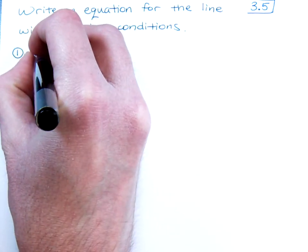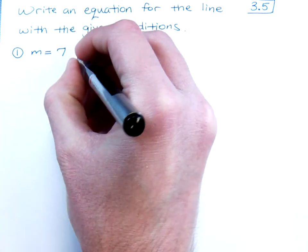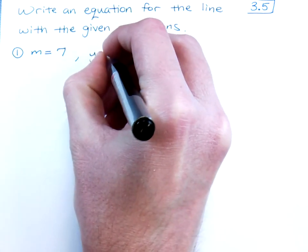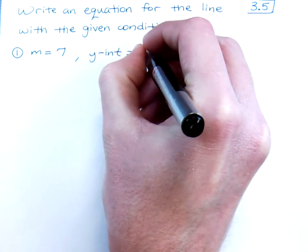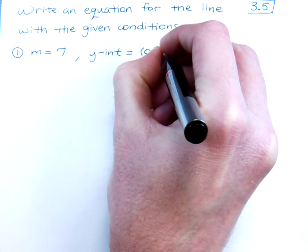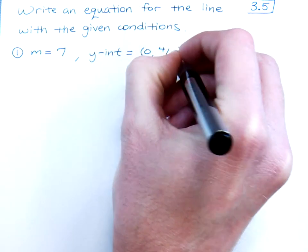So let's look at this first line right here. I'm telling you that the slope is equal to 7, and it has a y-intercept of 0, 4/5.